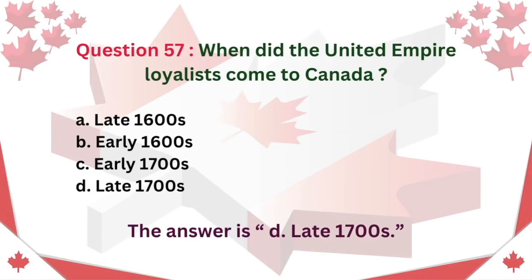Question 57. When did the United Empire Loyalists come to Canada? A. Late 1600s B. Early 1600s C. Early 1700s D. Late 1700s. The answer is D. Late 1700s.